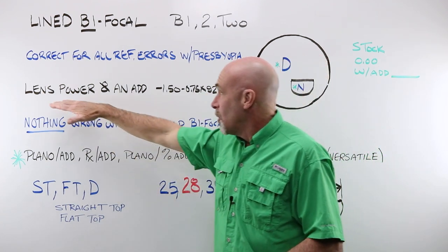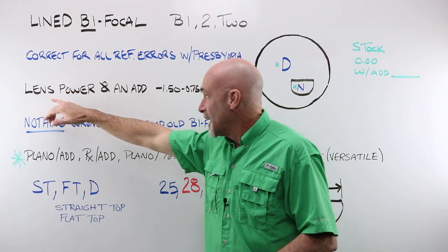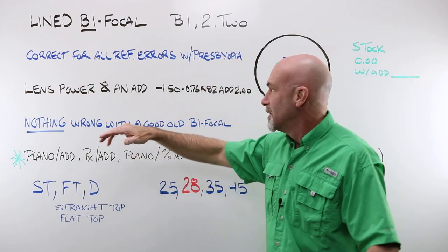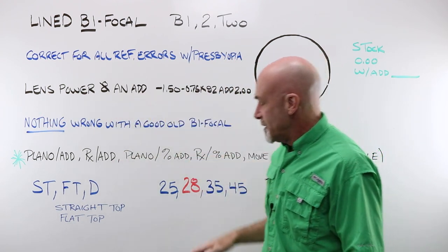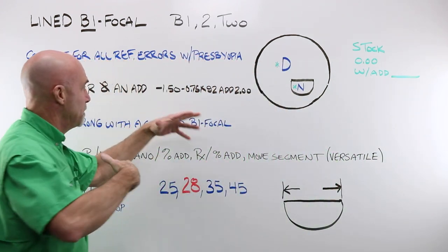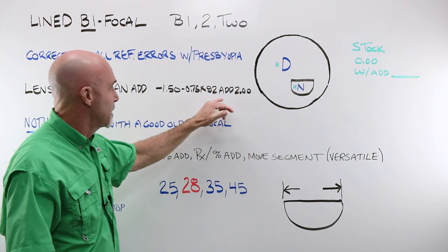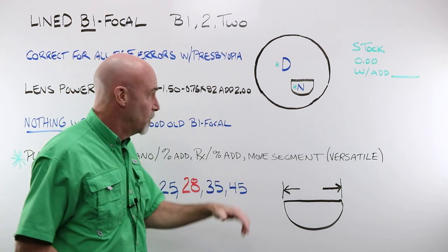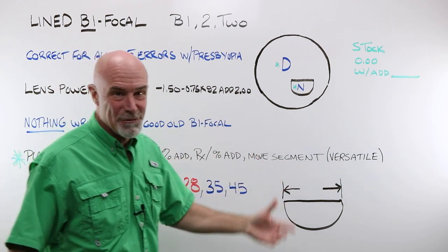It is always going to be combined, a lens power, a prescription, and an add. Minus 150, minus 75, axis 92, with an add of two. No add, no need for a bifocal.